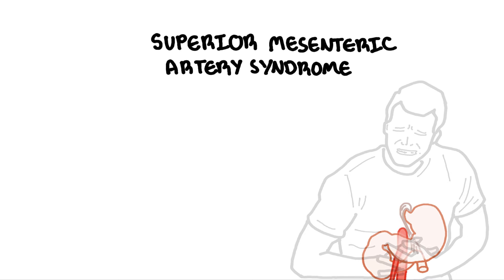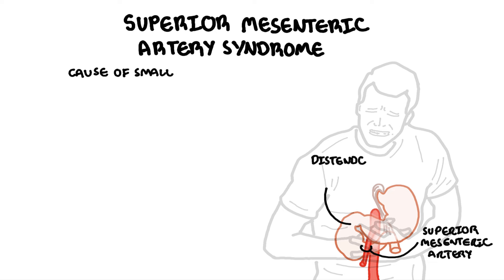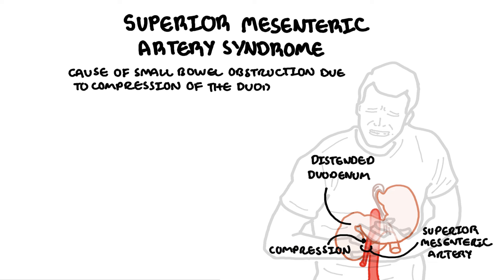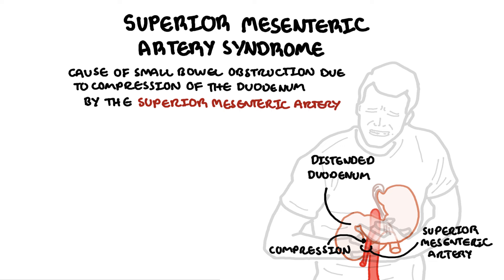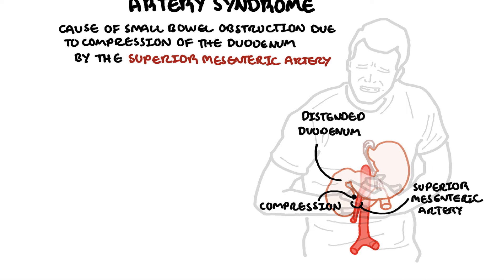Superior mesenteric artery syndrome is a rare cause of small bowel obstruction from compression of the third part of the duodenum by the superior mesenteric artery anteriorly and the aorta or vertebra posteriorly. The cause is usually from loss of mesenteric fat pad between the superior mesenteric artery and the aorta.